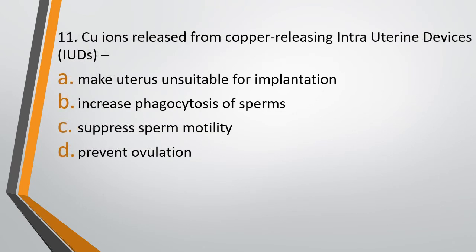Question 11. Copper ions released from copper-releasing IUDs — Option A: Make uterus unsuitable for implantation. Option B: Increase phagocytosis of sperms. Option C: Suppress sperm motility. Option D: Prevent ovulation. The correct answer is Option C — they suppress sperm motility.